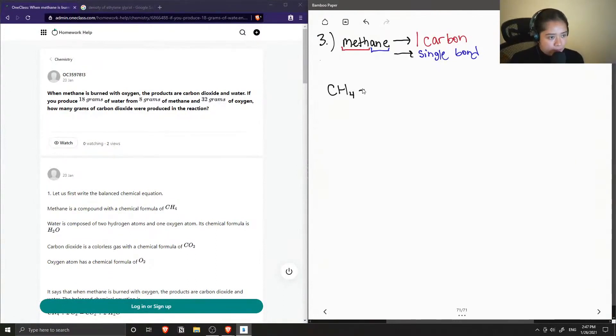And methane reacts with oxygen gas, which is in its diatomic state, so it's O2. And this produces carbon dioxide and water.